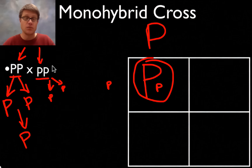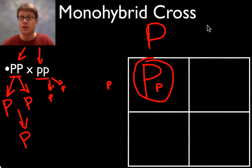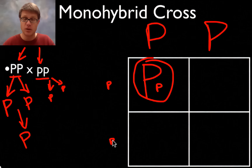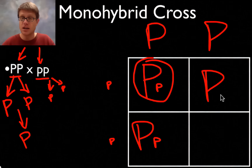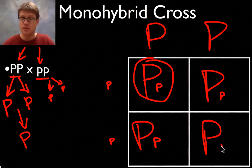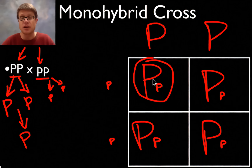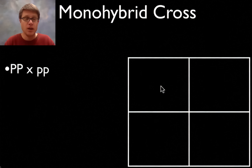You don't really need a big Punnett square for this. You could fill it in — big P on one side, little p on the other — but you're going to get the same thing in all of the boxes. It's still a 1 to 1 ratio, meaning 100% of the time you're going to get that heterozygous result.